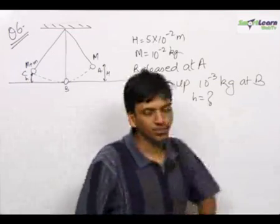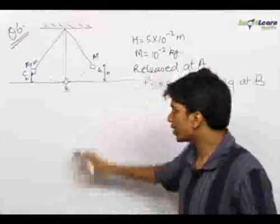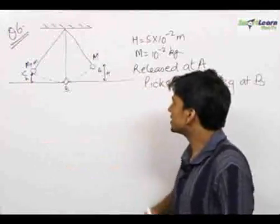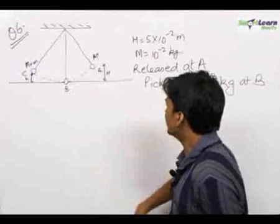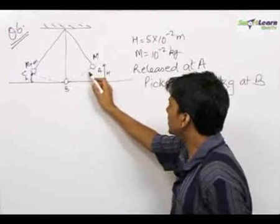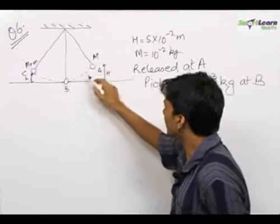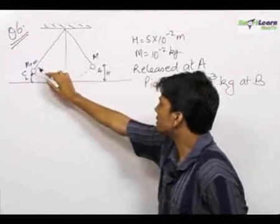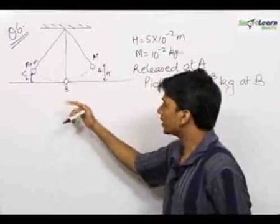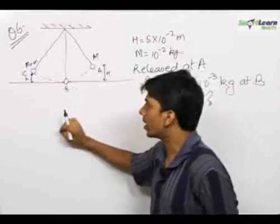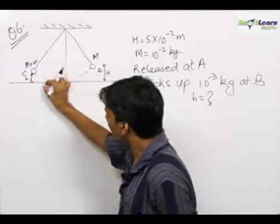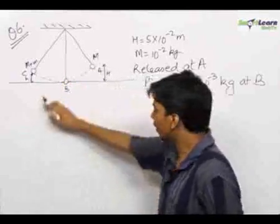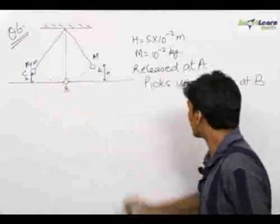In this question, there is a combination of work energy and collision. What happens is that this mass m travels down — this is the bar of mass m. It travels down and picks up another object of mass m at this point. The other mass sticks to this mass and the combined mass rises to height h. We need to find out this height h given the data.